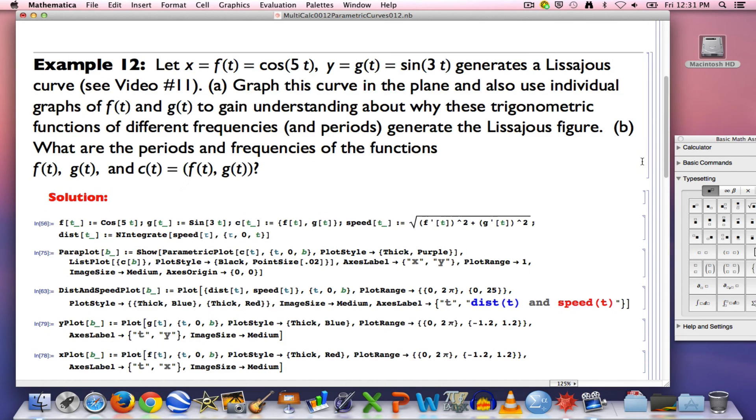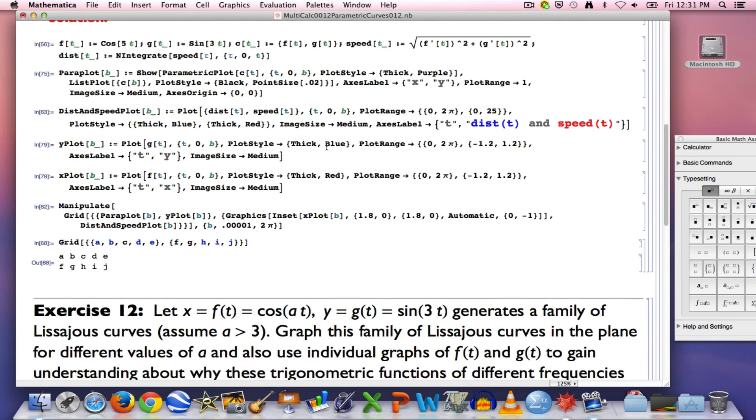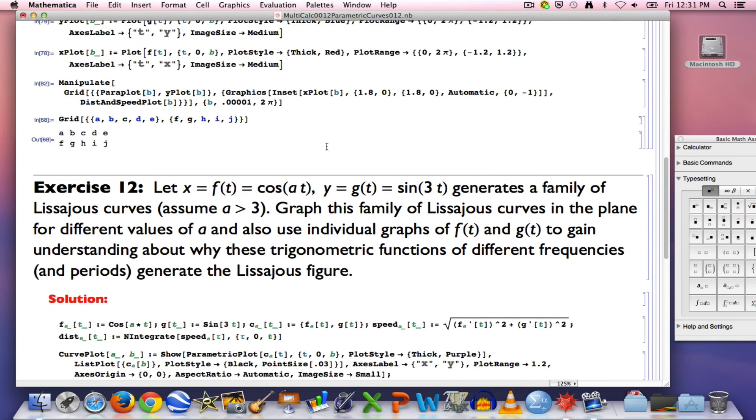If I chose to make this 5 a 6, for example, then the period of the Lissajous figure is no longer 2 pi. I'll let you experiment with that if you want. Actually, my exercise is something similar. I put an a here instead of a 5. If you choose different values of a greater than 3, you get different kinds of Lissajous figures. I guess even a equals 3 could be considered to be 1, though it would be a circle.